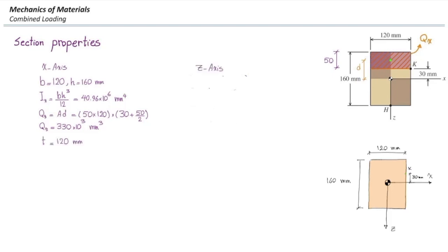For the Z-axis, base and height are switched: base = 160 mm and height = 120 mm, giving IZ. For QZ at point K, cutting parallel to the Z-axis results in zero area, so QZ = 0. If needed, the thickness for the Z-axis would be 160 mm.